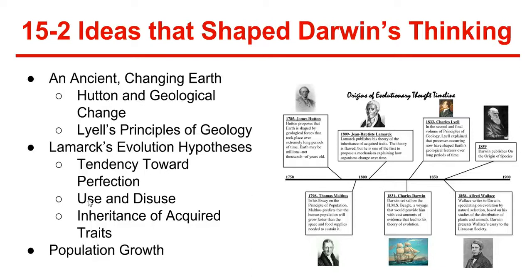However, Lamarck was one of the first to develop a scientific hypothesis of evolution and to realize that organisms are adapted to their environment. Another idea that shaped Darwin's thinking was population growth. In 1798, Thomas Malthus published a book noting that babies were being born faster than people were dying. Malthus reasoned that if the human population continued to grow unchecked, sooner or later there would be insufficient living space and food for everyone, and the only forces working against population growth were war, famine, and disease. Darwin realized this reasoning applied even more strongly to plants and animals, and summarized that most offspring of animals must die.